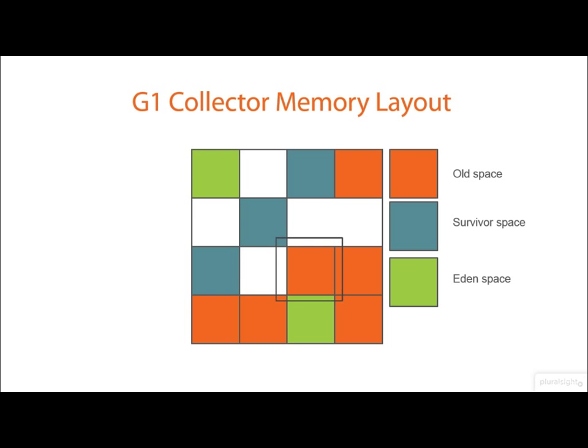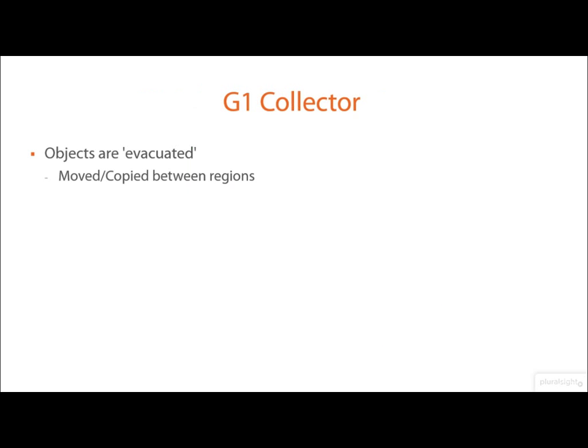These spaces are used in the same way as previously. New memory is allocated into the Eden space. After a minor GC runs, that memory is moved into survivor space, and old objects are promoted into the old space. For the G1 collector, this is called evacuation — objects are evacuated or moved between these regions: from Eden to survivor, Eden to old, survivor to old, and eventually discarded altogether.